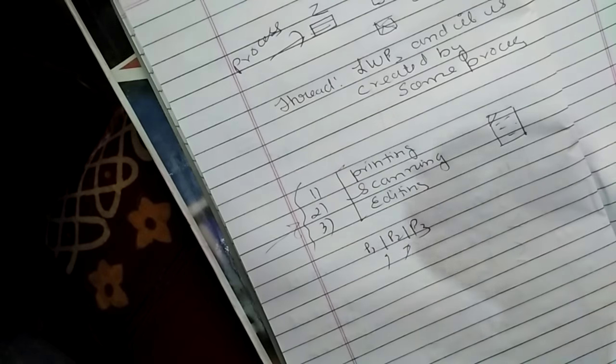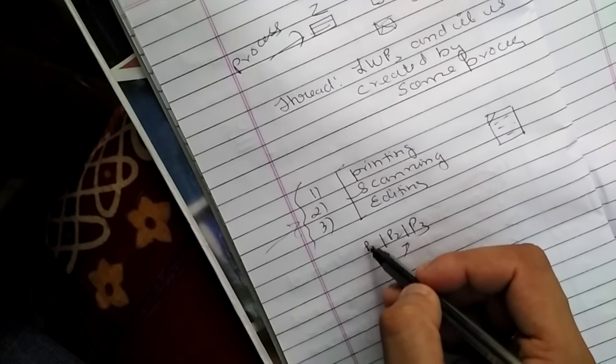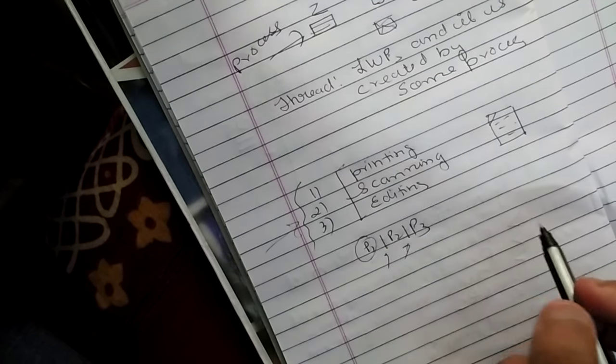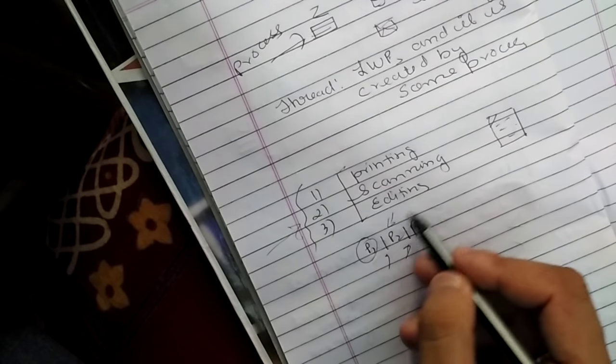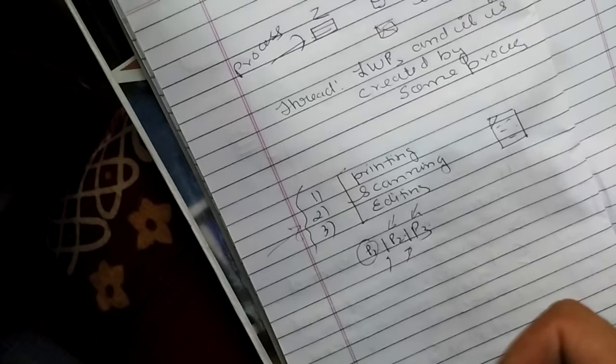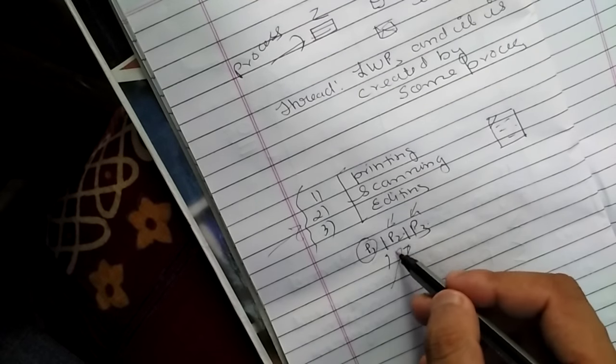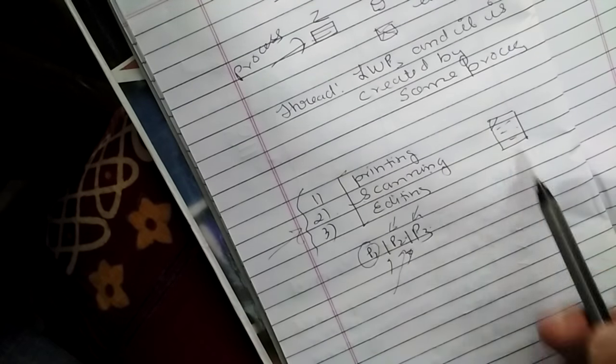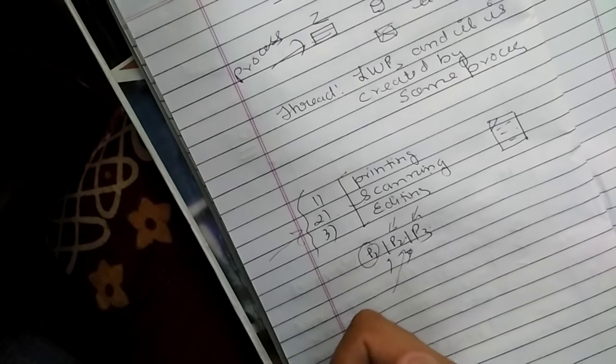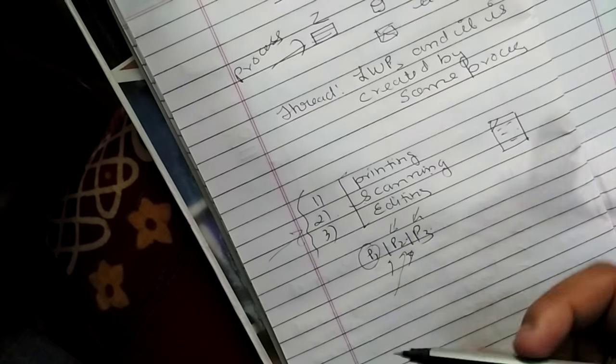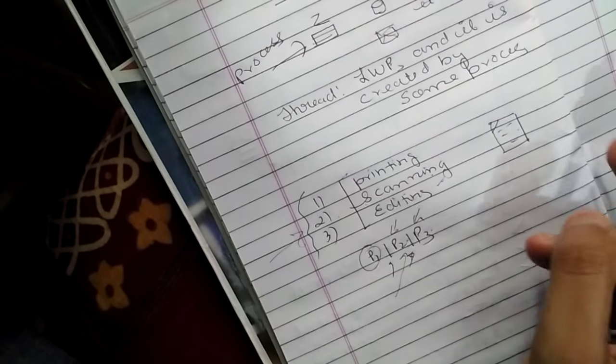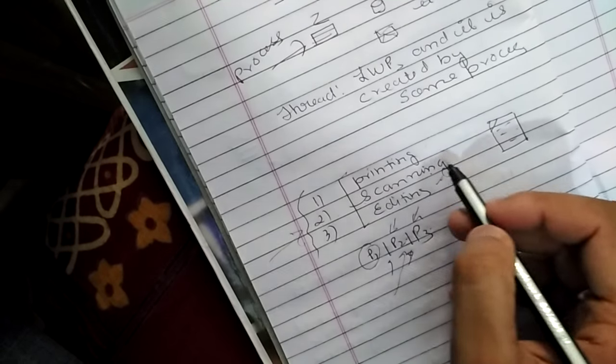And also, in order to accomplish the process P1, I have to put P2 and P3 in the wait state. In order to accomplish the task P2, that is scanning, I have to hold printing and editing. Or in order to do editing, I have to stop the tasks printing and scanning.